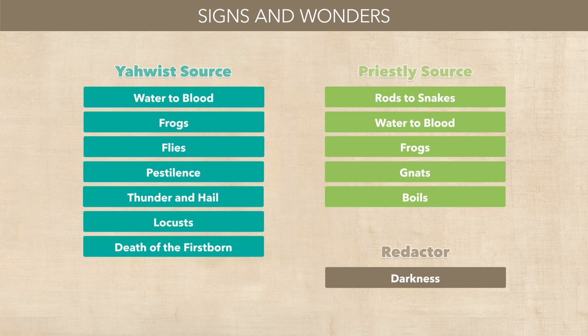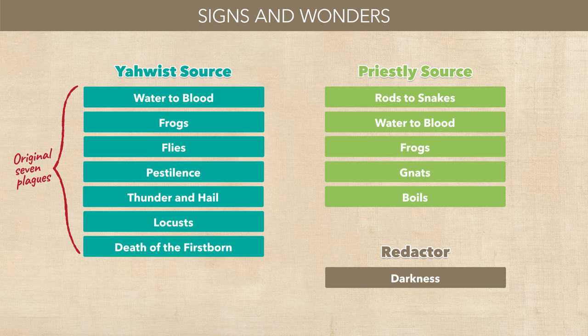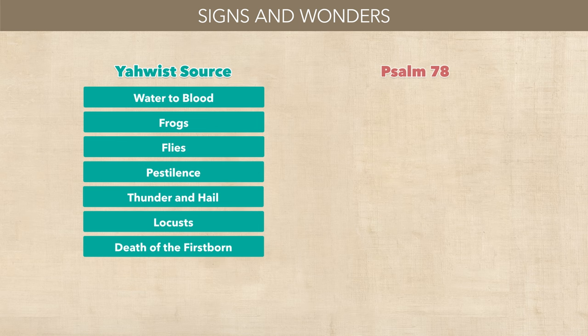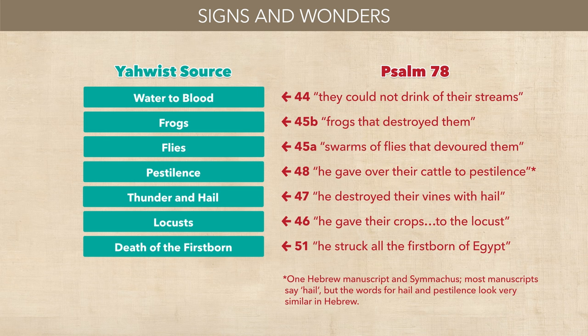Most scholars believe that the first version of this story had only seven plagues, often attributed to an author called the Yahwist. Inspired by this story, a later author known as the Priestly Author wrote his own story involving five plagues, two of which were similar to the original seven. An editor then merged both versions into a unified narrative and inserted the plague of darkness into the locust plague. This theory finds support from Psalm 78, which seems to have been composed before the final redaction of Exodus — its description of Jewish history includes the seven plagues known to the Yahwist, but none of the Priestly plagues.